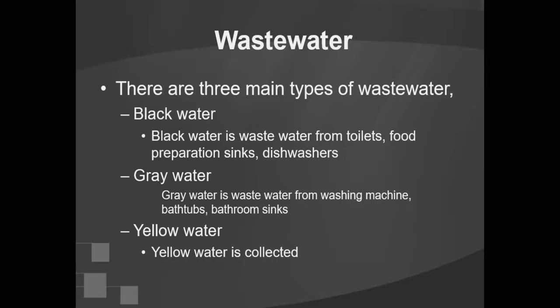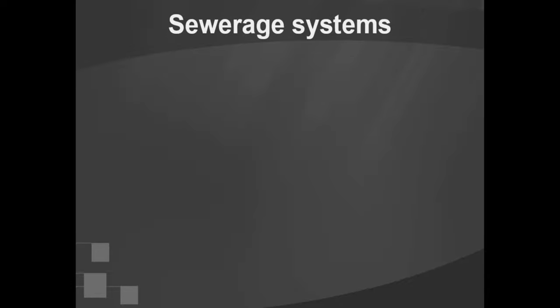There are three main types of waste water. The first is black water: waste water from toilets, food preparation sinks, and dishwashers. The second is grey water: waste water from washing machines, bathtubs, and bathroom sinks. The third is yellow water, which is collected separately.